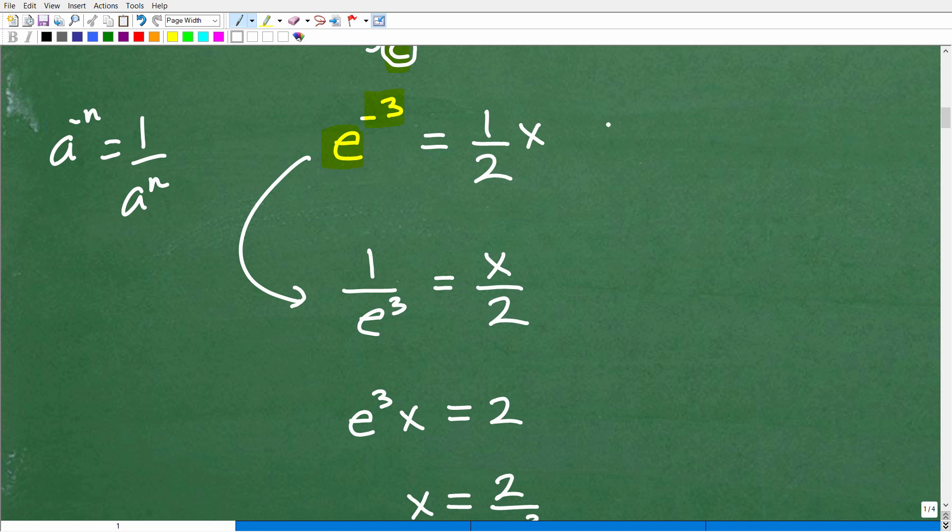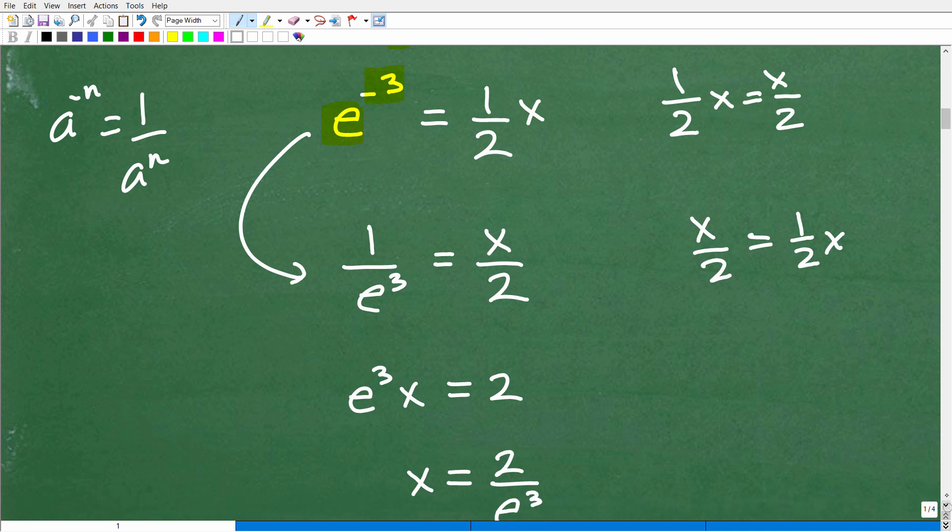Now I have 1 half x. I can write that 1 half x is the same thing as x over 2. So if I have x over 2, that's equal to 1 half x. Now, the reason why I kind of really highlight that is I have 1 half x here, but I want to think of it as x over 2. So now I have 1 over e cubed is equal to x over 2. I have an awesome little proportion right here. So I can just use the cross product to solve.